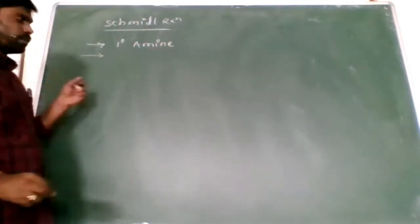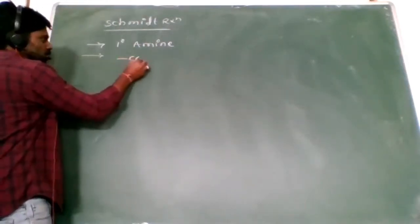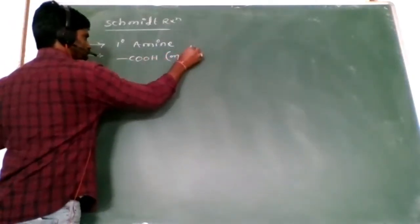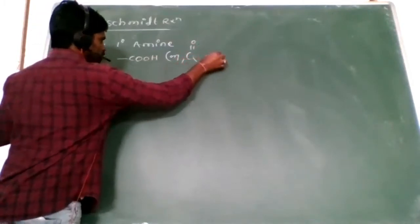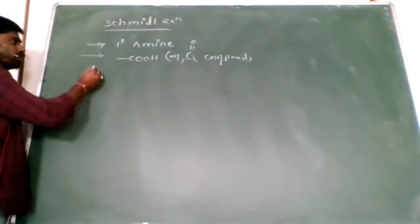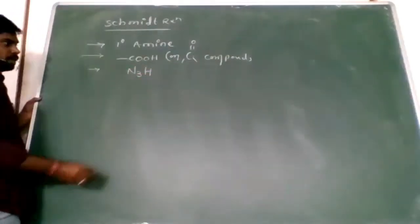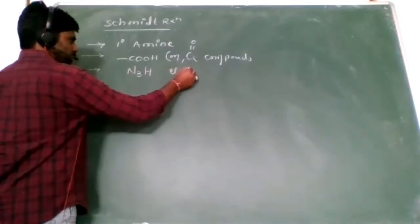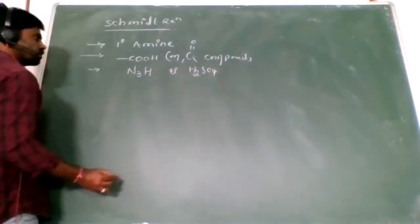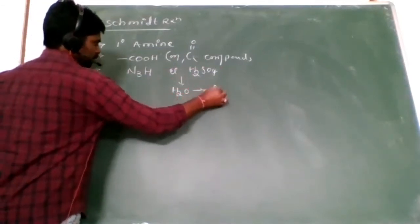How is it prepared? When carboxylic acids react with hydrazoic acid in the presence of sulfuric acid — a strong acid — after hydrolysis, we get primary amines.